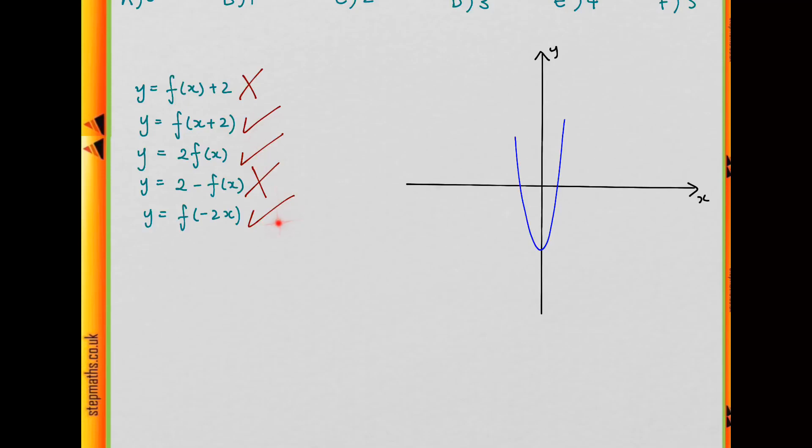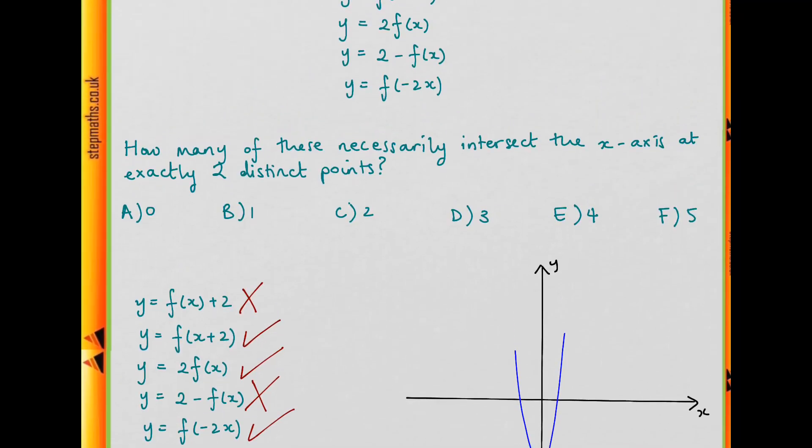So all in all, we've got three of these graphs where they have to have two distinct intersections. So we have solution D.